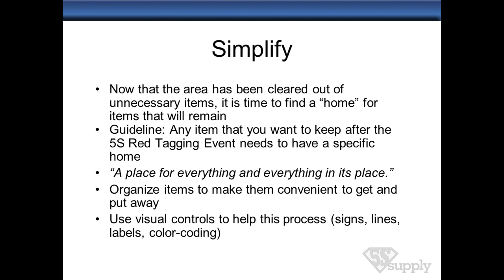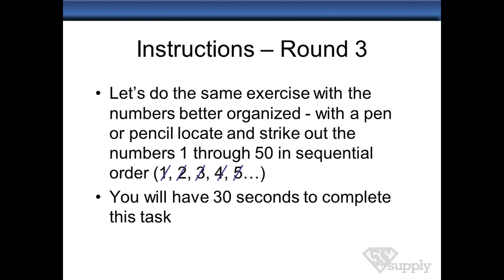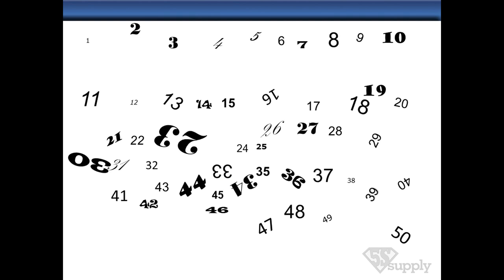Then we get to Set in Order and Simplify. Now that we've decided we definitely want these items and they're needed files, how do we put them in a more organized manner so they're easy to find? For the next round of the exercise, let's put them in some numeric order. Start — okay, you get the idea. It's much simpler and easier to go through now, with some structure. This is usually where a lot of people stop and say, 'Great, I'm much more organized and reorganized my space.'